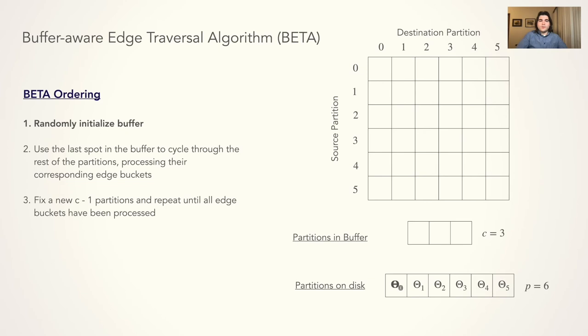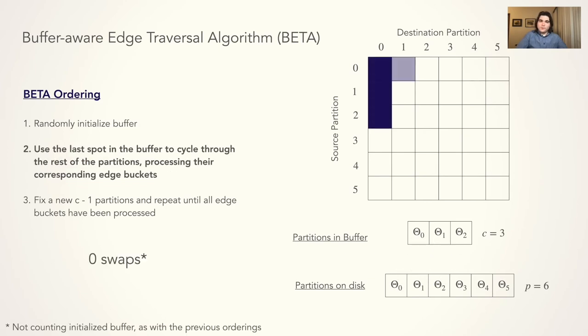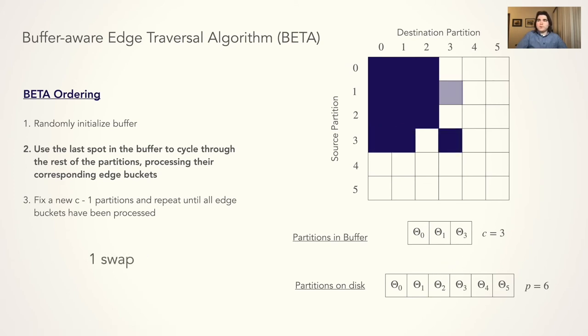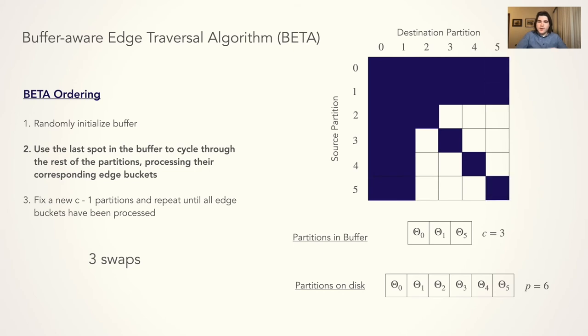First we initialize the buffer to contain a random c partitions. Then we process the edge buckets associated with the partitions in the buffer. We keep the first c-1 partitions as fixed, and then we use the last entry in the buffer to cycle through the rest of the partitions. Now we swap out 3, bring in 4, we process its edge buckets, we swap out 4, bring in 5, process its edge buckets, and now we've reached a point where all edge buckets that use partition 0 and partition 1 have been processed.